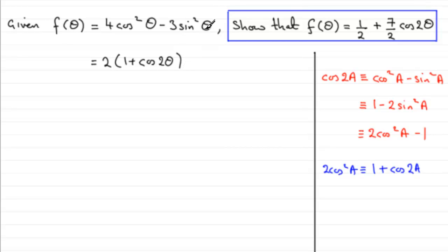Now what about this next term, minus 3 sine squared theta? Well, again, we've got to take this second identity cos 2a. Cos 2a is identical to 1 minus 2 sine squared a. And this time, if we make 2 sine squared a the subject.